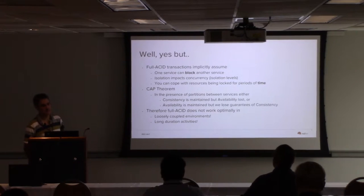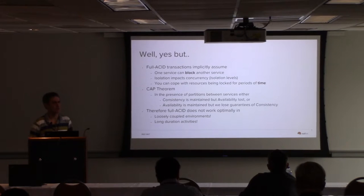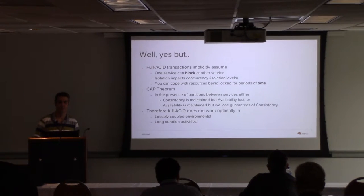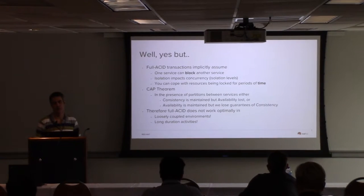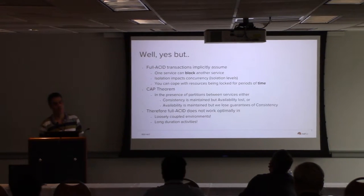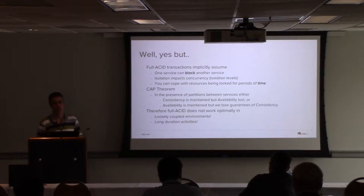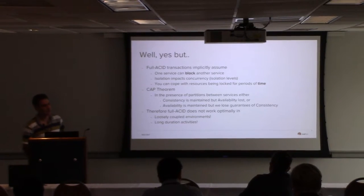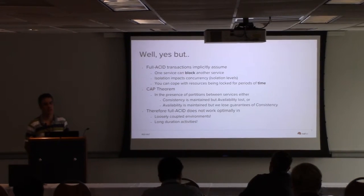The problem with full ACID is that the two-phase commit protocol is a blocking protocol. Also, to achieve isolation you're typically going to have to provide locks on data — though with optimistic locking during the transaction, the actual locking happens at the final two-phase commit phase. Failures during that phase can also cause blocking. If you've got guaranteed isolation between different transactions, that's going to tie your hands in terms of parallel processing.